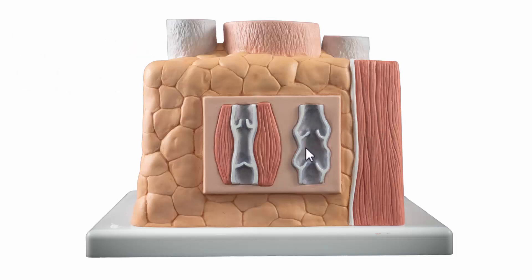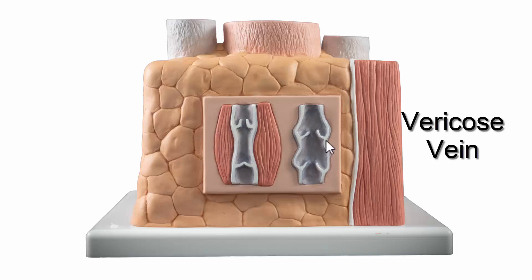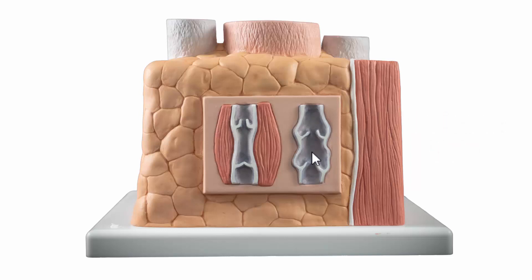Moving over here, you can see that the valves of this vein don't quite close on each other — these are incompetent valves and blood just leaks backward. Notice how stretched out the walls are. This is a varicose vein. When blood isn't moving forward it leaks backwards, and yes, you can have increased risk of thrombosis. Well, I hope this helped.